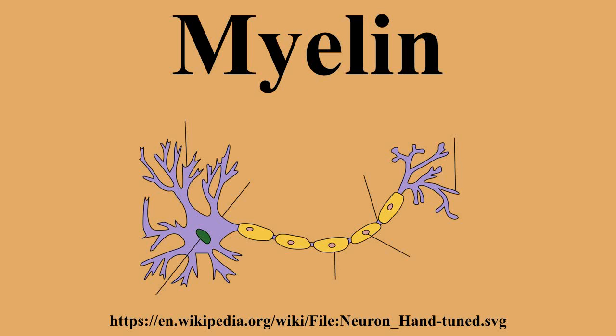Myelin helps to insulate the axons from electrically charged atoms and molecules. These charged particles are found in the fluid surrounding the entire nervous system. Under a microscope, myelin looks like strings of sausages. Cholesterol is an essential constituent of myelin.